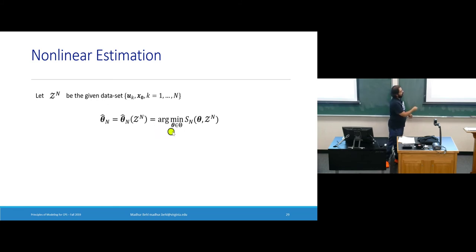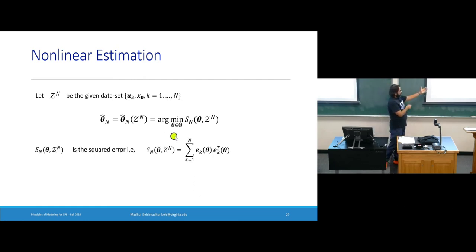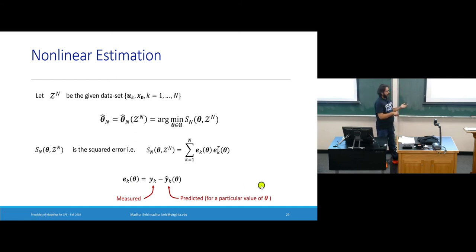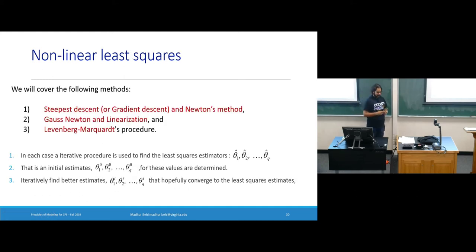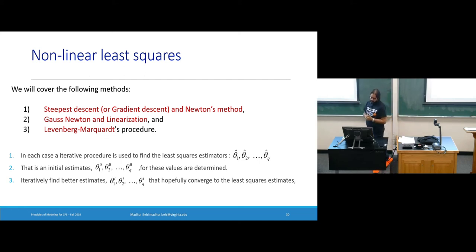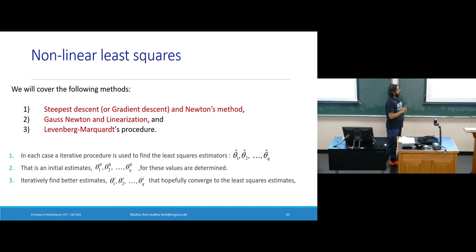The sum of squared errors is expressed as e^T(θ)·e(θ), where error is measured minus predicted, and we've seen how to express the prediction from our state space as a function of θ. The next question is how to actually solve this minimization if S is a complicated nonlinear function of θ. This is where nonlinear least squares comes in. We will look at three algorithms: Steepest Descent, Gauss-Newton, and Levenberg-Marquardt. You may have heard of at least the first one; the third is not commonly taught in basic courses.